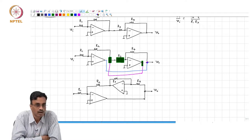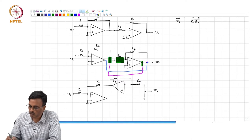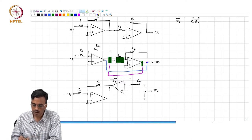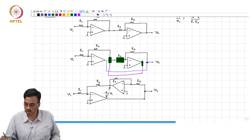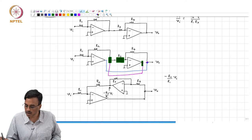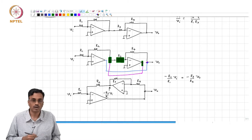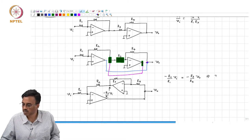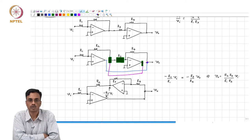Now you tell me what the output is. This is Vi, this is virtual ground. So what must this be? Minus R2 by R1 times Vi, and that must be equal to minus R3 by R4 times Vo. Therefore, Vo must be equal to R2·R4 by R1·R3 times Vi. Does that make sense?